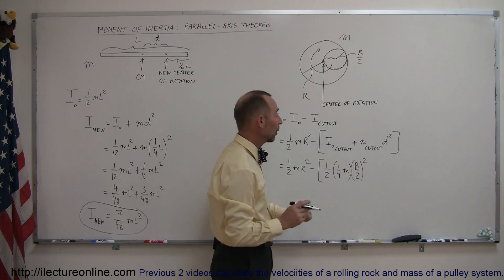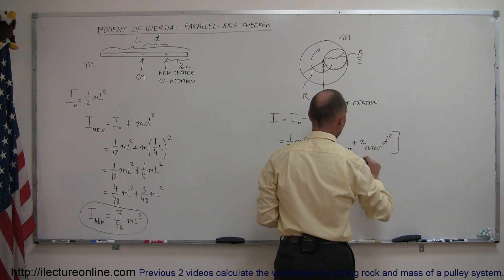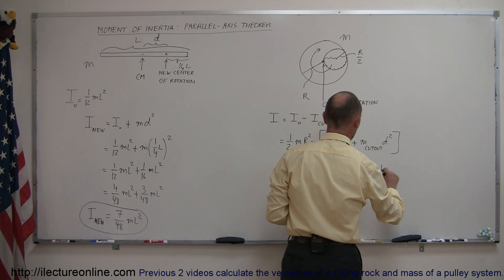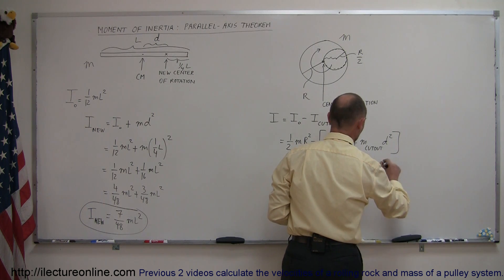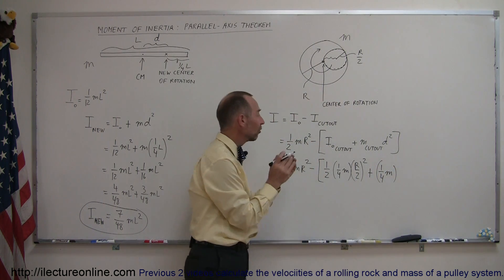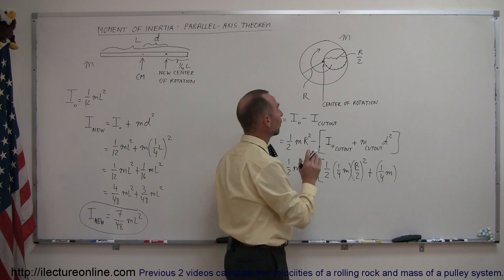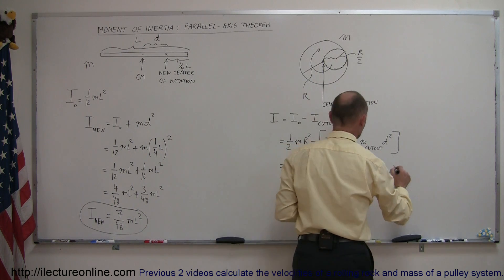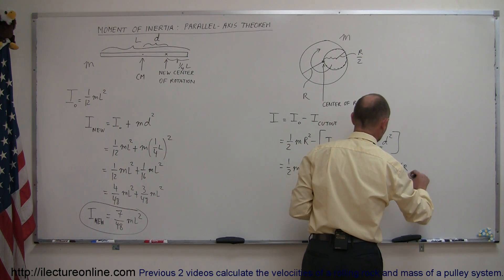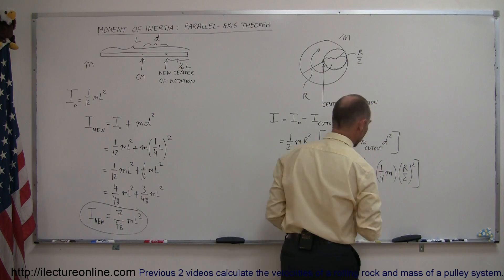Since the cutout is moved to the right, we add the mass of the cutout — which is one quarter the mass of the whole disk — times the displacement squared. The displacement is R/2, and we square that.